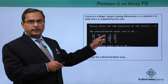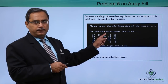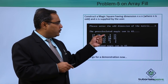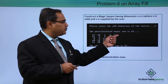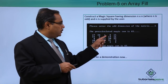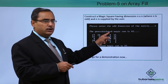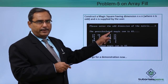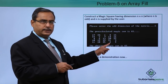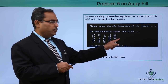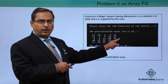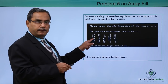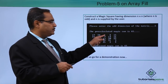The first number 1 will be placed in the middle column of the first row, and we shall always try to move diagonally in this particular direction. From 1, the next number 2 is not within the limits, so 2 will be placed here. Then 3, and 4 would be outside the limit, so I shall come down here. Then 4, 5, 6 will be placed here.